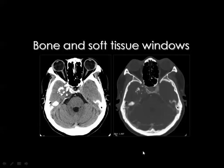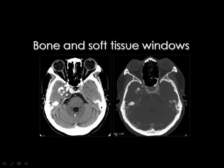We should have soft tissue and bone window images. With multi-detector machines we can obtain 3D images for the mandible and alveolar margin. The soft tissue window shows details of the orbit and brain tissue, while in the bone window images you can better evaluate lesions containing calcium, such as chondrosarcoma, and assess the bones of the orbit and calvarial bones.